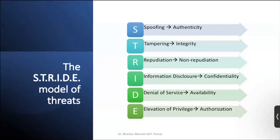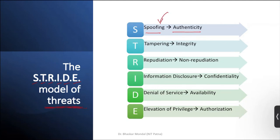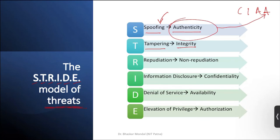Then the STRIDE model of threats — there are six things to remember, called STRIDE. First is spoofing, which is related to authenticity — somebody unauthorized is going to spoof. Then is tampering, which means changing the data — tampering is going to hamper your integrity. We had spoken about CIA: confidentiality, integrity, and availability, with an added A for authentication.